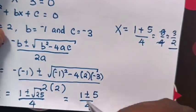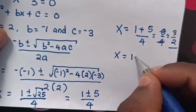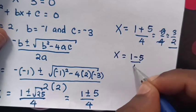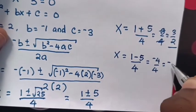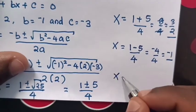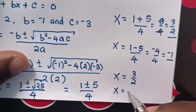And another solution: x equals 1 minus 5 over 4, which equals negative 4 over 4, which is negative 1.